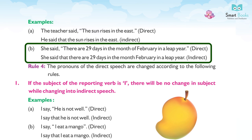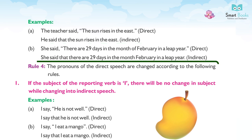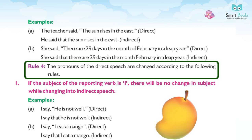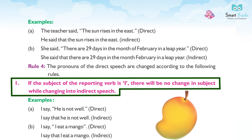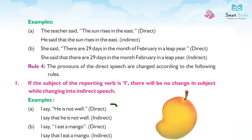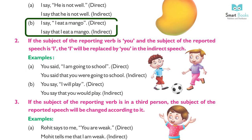Rule 4: The pronouns of direct speech are changed according to the following rules. (1) If the subject of the reporting verb is 'I', there is no change in subject. Examples: (a) I say, 'He is not well.' (Direct) → I say that he is not well. (Indirect) (b) I say, 'I eat a mango.' (Direct) → I say that I eat a mango. (Indirect)